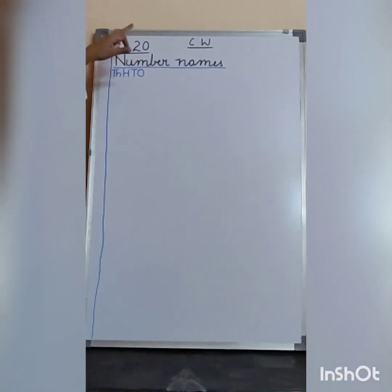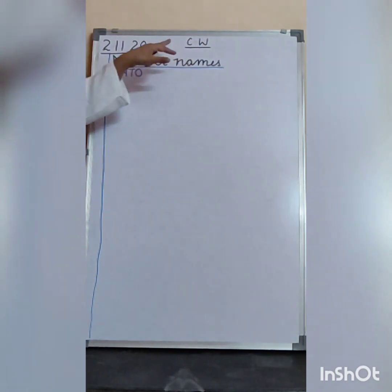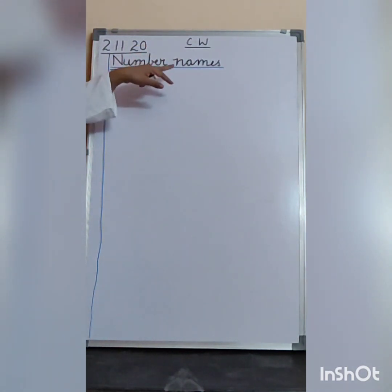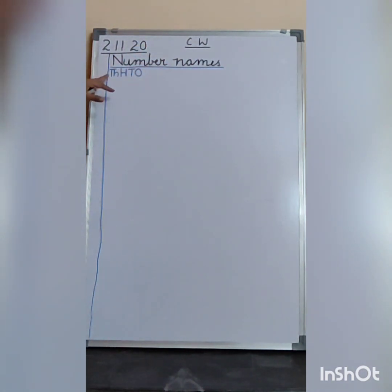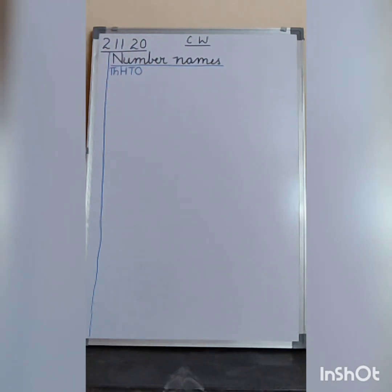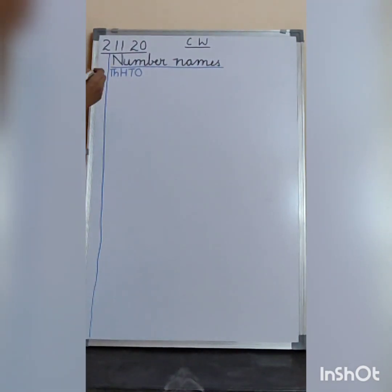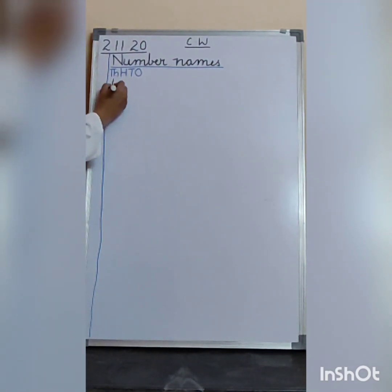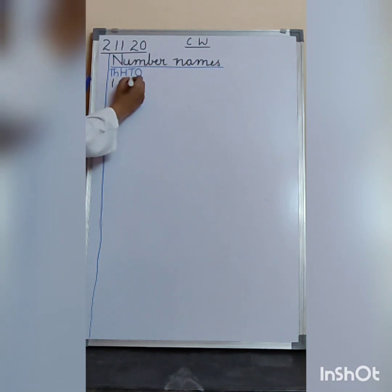First you write the date, your classwork, and you write your number names. Then you write the first sign: 1000s, 100s, 10s and 1s. Then you start writing from 1001.